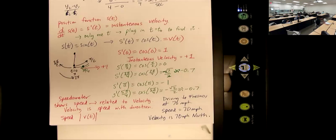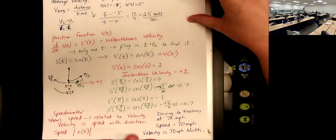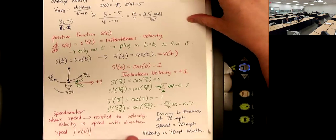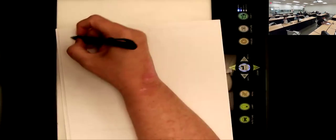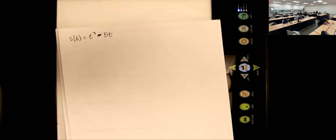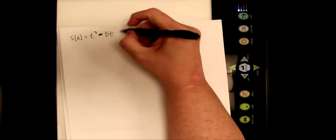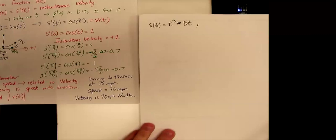So driving to Fresno at 70 miles per hour, my speed is 70. My velocity is 70 miles per hour northwards. Well, slightly off north, but north is close enough. You got to have a direction.